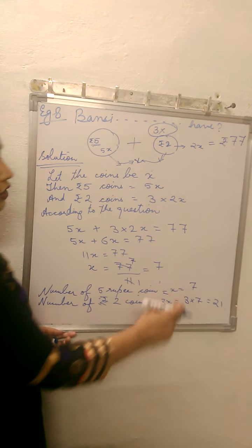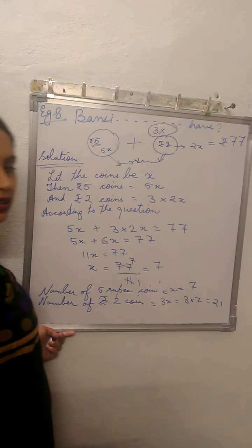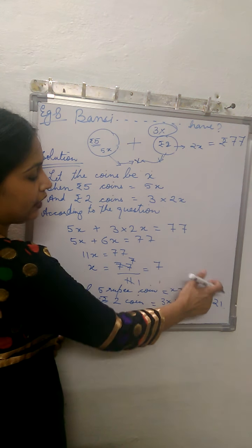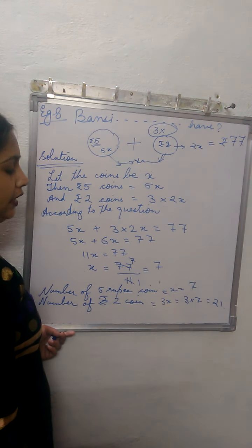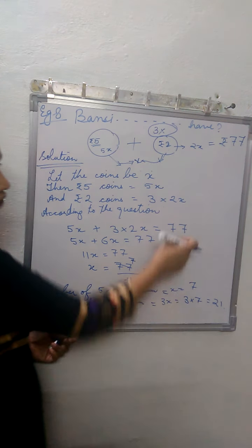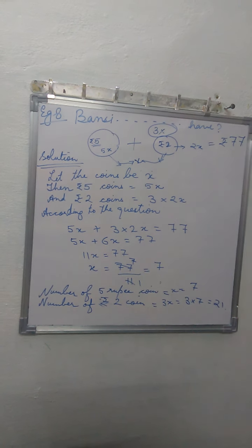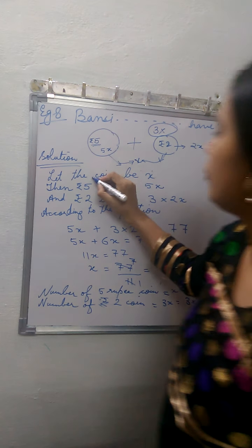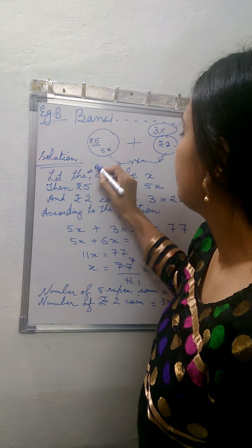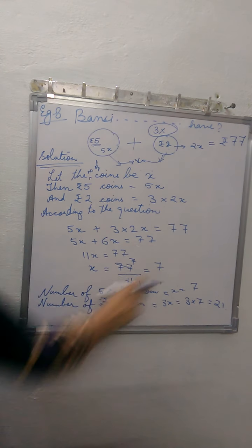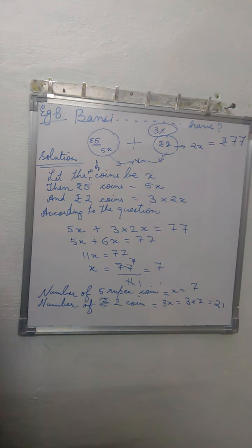Now, their total should come to 77. But for that verification, you need to multiply by the value of each coin—that is 5 and 2. That should give you 77. Here we are finding the number of coins. So you can write: let the number of coins be X. Then number of 5 rupee coins is X, and number of 2 rupee coins is 3X, which gives you the answer.